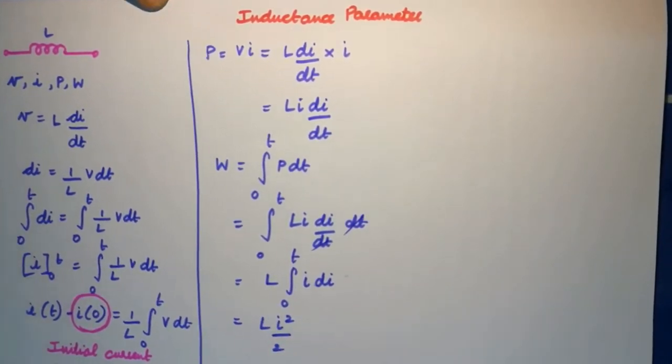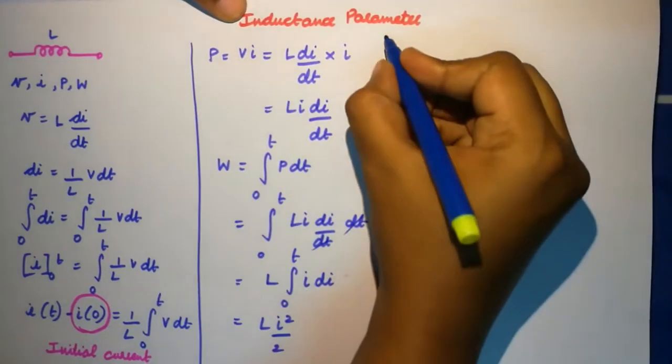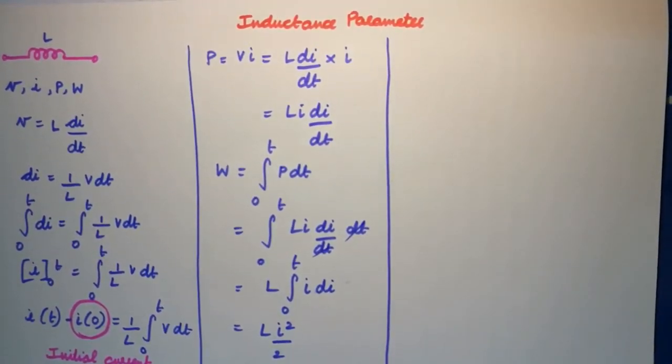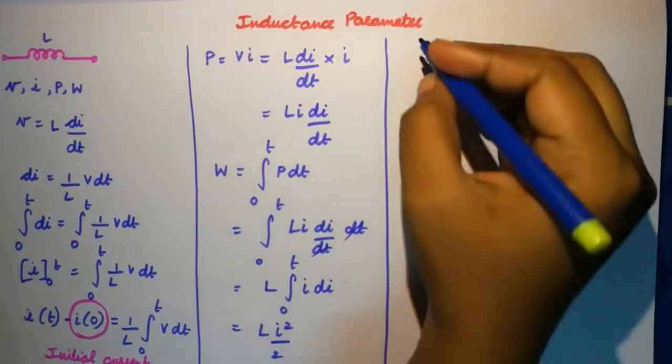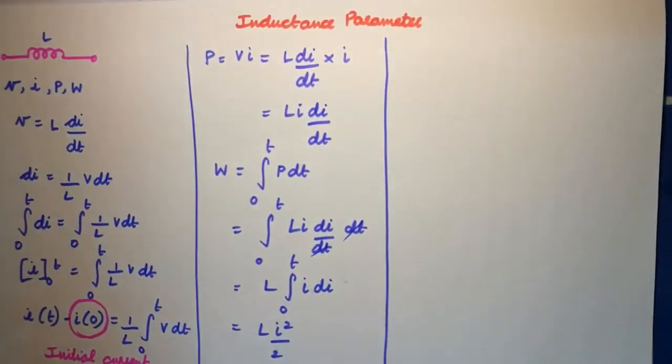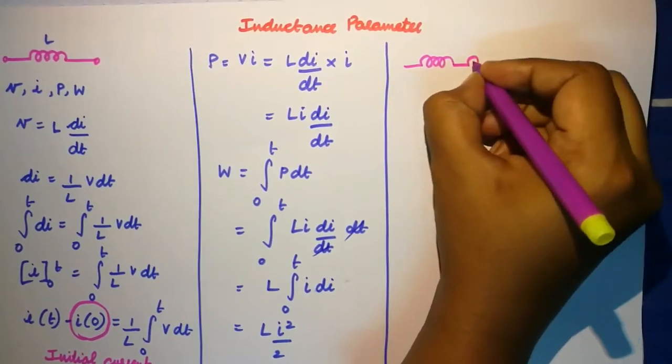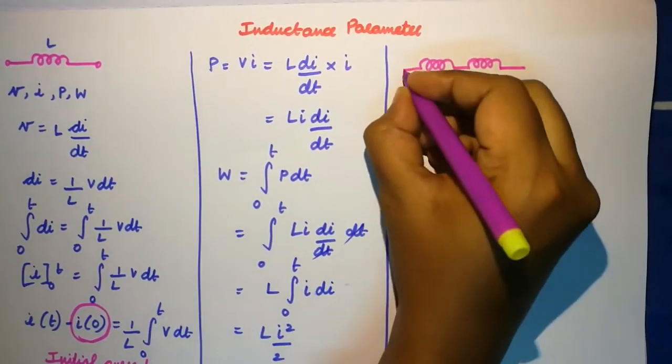So we have found v, i, P, and W for an inductor. And now let us try to find out the relationship between inductors when they are connected in series as well as parallel.